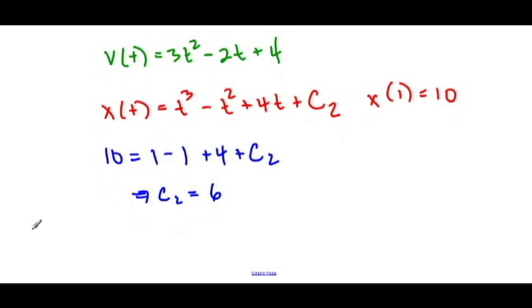And, therefore, our position function, x(t), is equal to t³ - t² + 4t + 6.